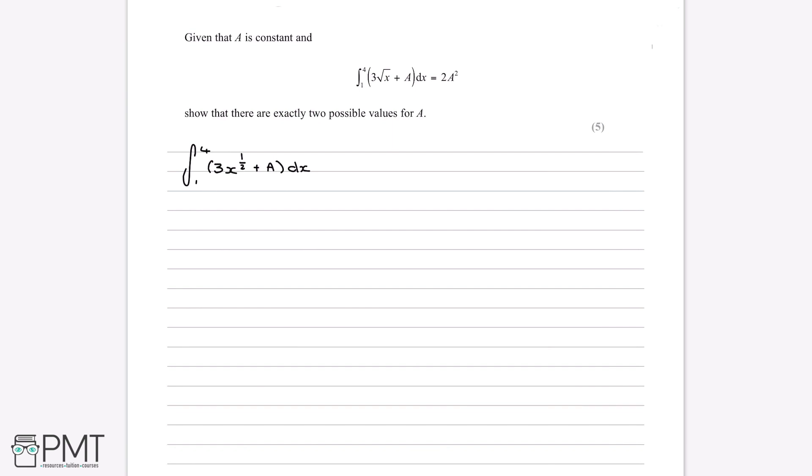So now we have it in this form, we can integrate what's inside the brackets, so 3x to the power of a half plus a. And the way we integrate is if we add 1 to the power, so 1 plus a half is 3 over 2, and then we do 3 divided by 3 over 2, which is 2. We're left with 2x, and then we keep the power of 3 over 2.